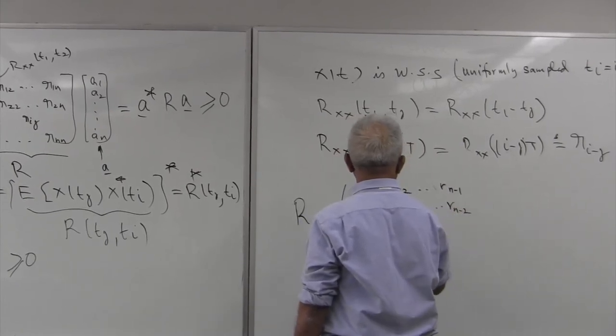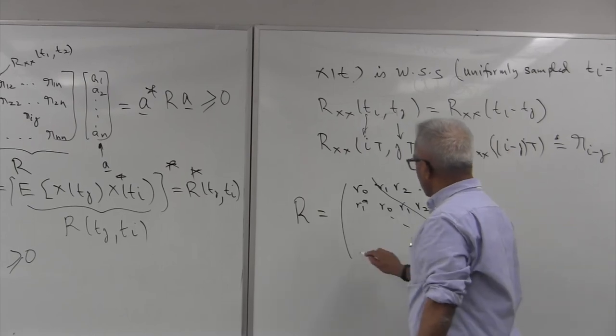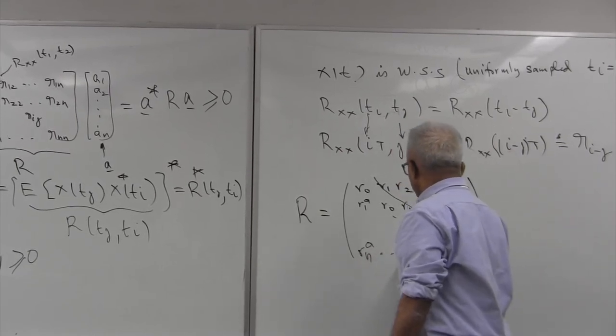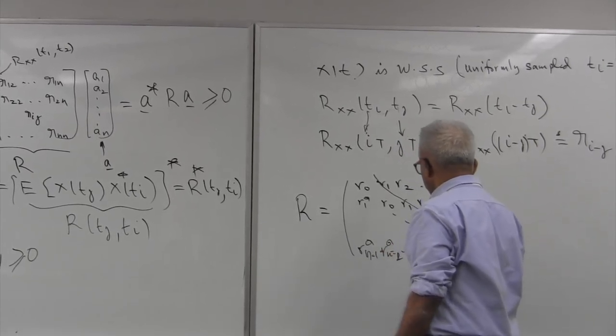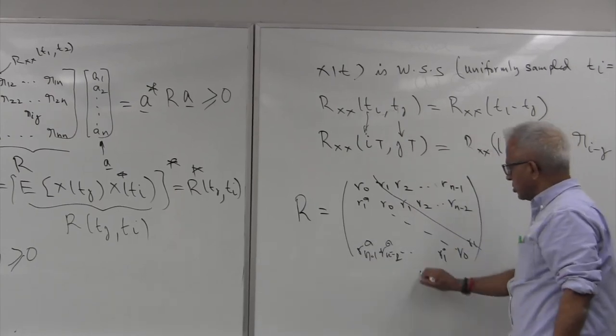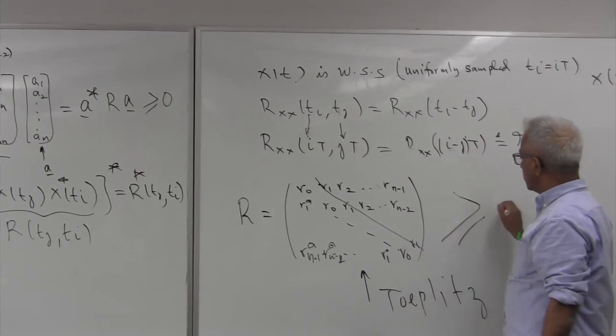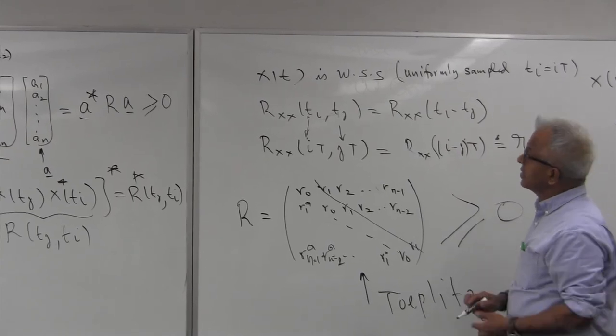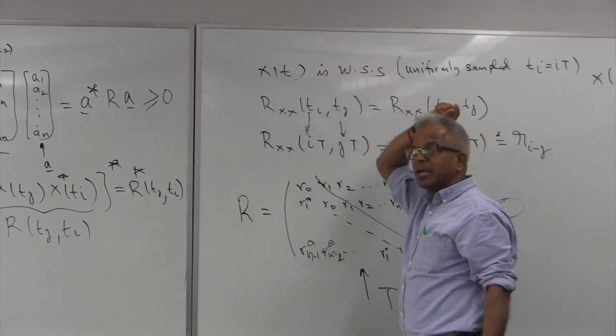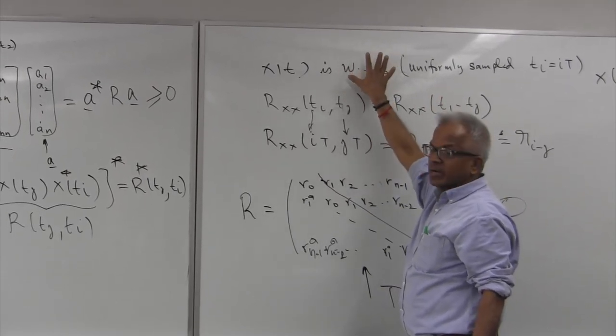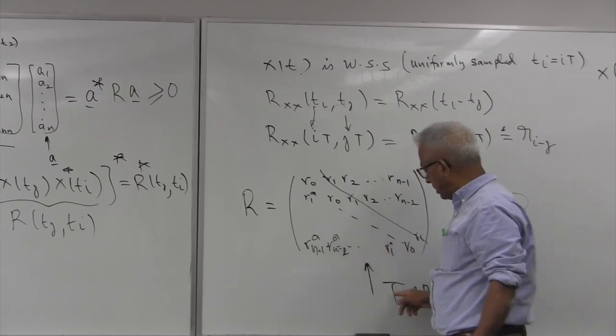But all the diagonal entries will be the same. All the other diagonal entries will be R1, and this will be Rn, etc. R1 star, etc. Rn minus 1, Rn minus 2, etc. R1 star. So this structure is also known as Toeplitz. But we already established that these matrices are non-negative definite. So here is a theorem. If a discrete time stochastic process is also wide-sense stationary, then its autocovariance matrix has a Toeplitz structure, T-O-E-P-L-I-T-Z. Toeplitz says all the diagonal entries are exactly the same.